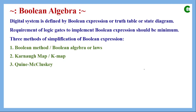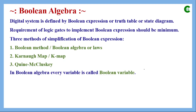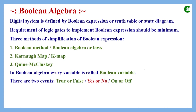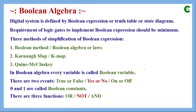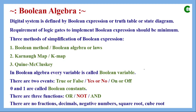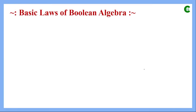Since we are talking about an algebra, there is also a place for constants, variables, and functions. In Boolean algebra, every variable is called a Boolean variable. We have two states: true or false, yes or no, on or off — that means either the logical high state or logical low state. Boolean constants have only two values: 0 and 1. There are three basic functions: OR, AND, and NOT. As an exception, in this algebra there is no place for fractions, decimals, negative numbers, square root, or cube root.